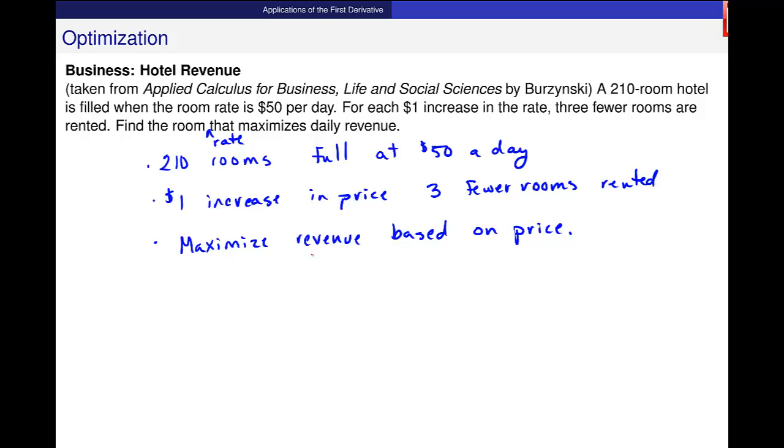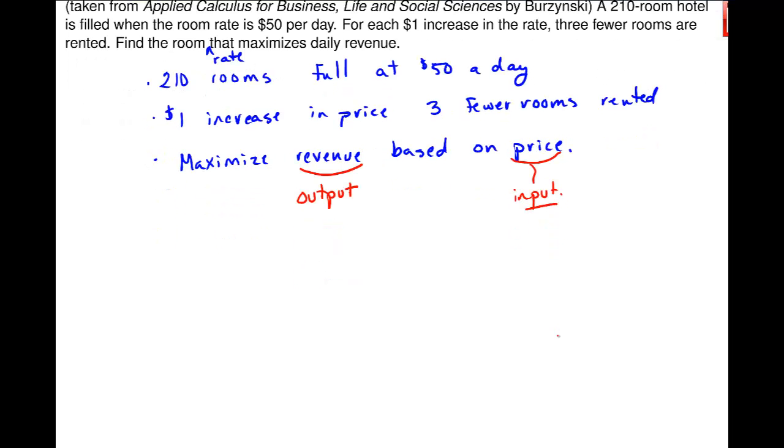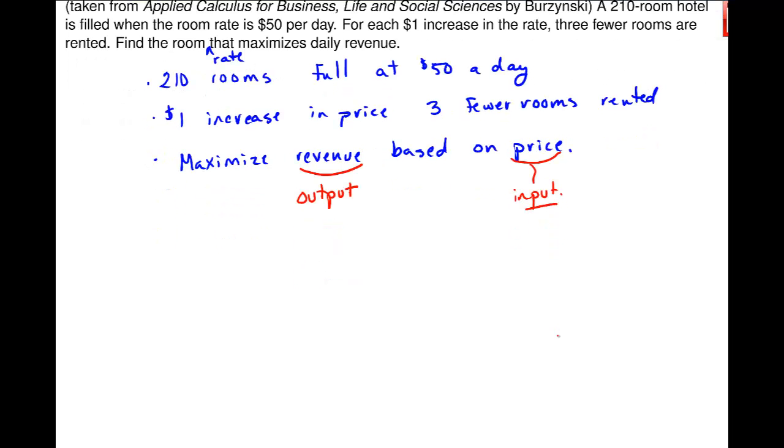This last sentence tells me that this should be the output of whatever function that I'm going to create and that price of the room should be the input. Now there are several ways to work this problem, but that's kind of where I get to. And this idea of identifying output and input before we begin is helpful.